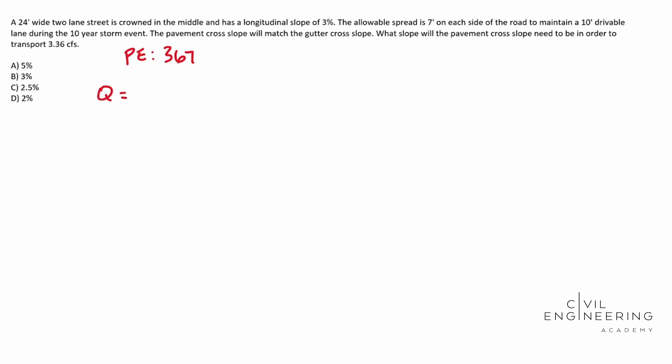Your flow rate is equal to K sub U divided by N times S sub X, raise that to the 1.67 power times S sub L, raise that to the 0.5 power, and we have T to the 2.67 power.